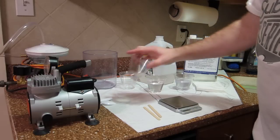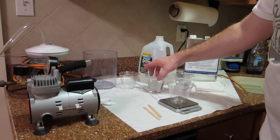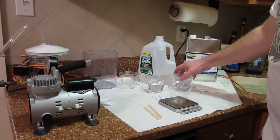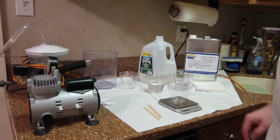For a daytime running light reflector, I'm going to use twenty-five ounces of this and I'm going to use twenty-two point five ounces of this, giving us a total of forty-seven point five.